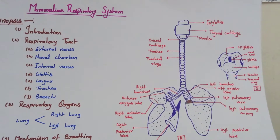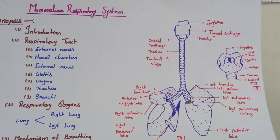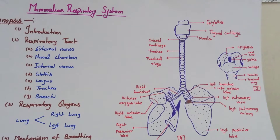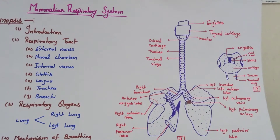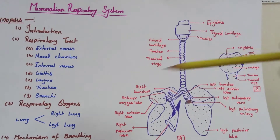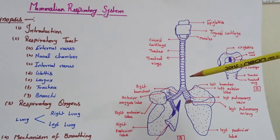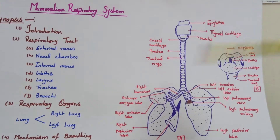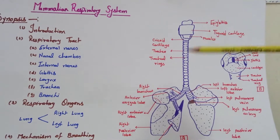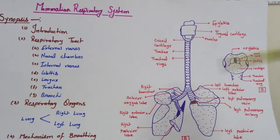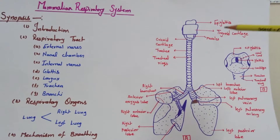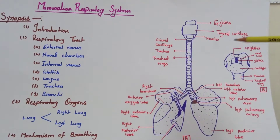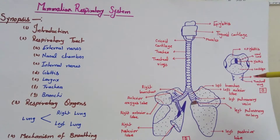The nasal chamber is a pair of nasal chambers present in the rabbit. It is a hollow chamber separated by the internal median nasal septum. The nasal chamber is responsible for the exchange of gases and passing gases from external layers to the internal layers.